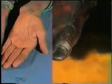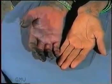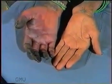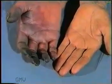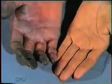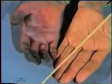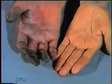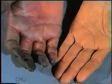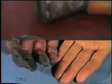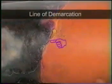A wet gangrene, as seen in the fingers of the right hand, shows black discoloration but the tissues are edematous and swollen, and there is no clear-cut demarcation between the gangrenous and the normal limb. In comparison, the dry gangrene shows a line of demarcation between the dead gangrenous part and the normal living limb, as seen in this leg.